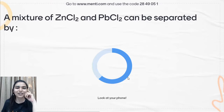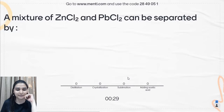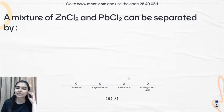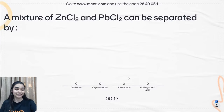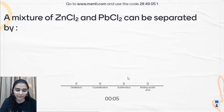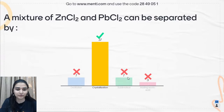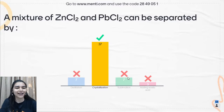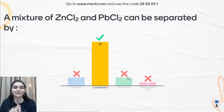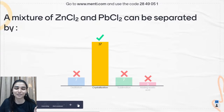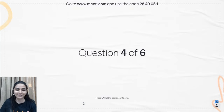Third question: a mixture of zinc chloride and lead chloride can be separated by — the answer is crystallization. This is a non-homogeneous mixture, so you can employ crystallization. Remember this as an important question.